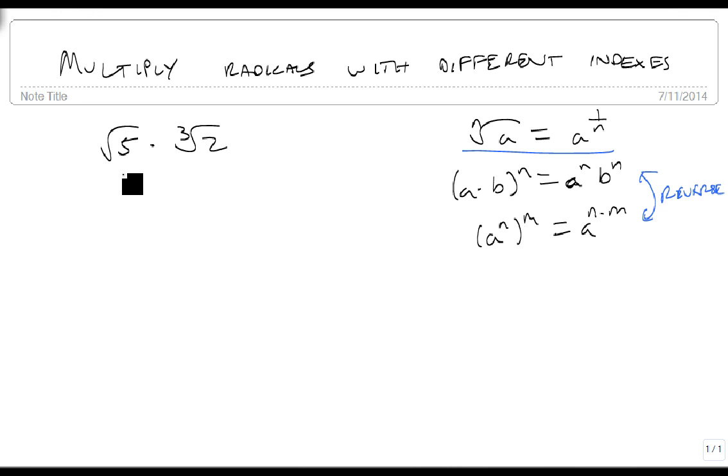So we're going to start by saying that the 5 becomes 5 to the 1 half power, and the 2 becomes 2 to the 1 third power. So now we've gotten rid of our radicals, and we've got this times in between them.